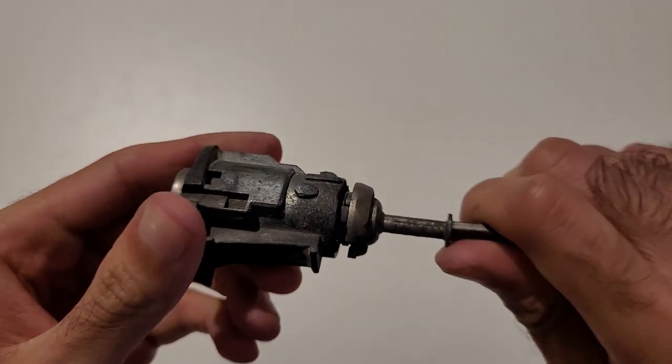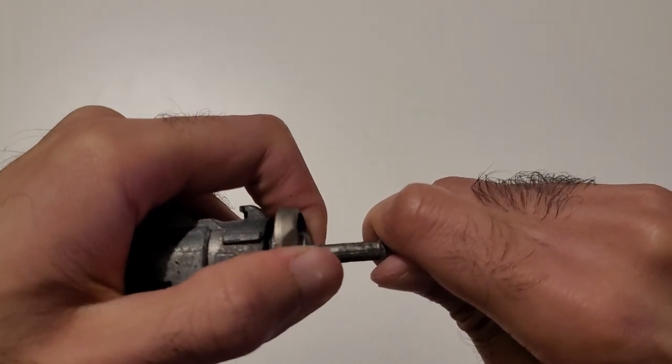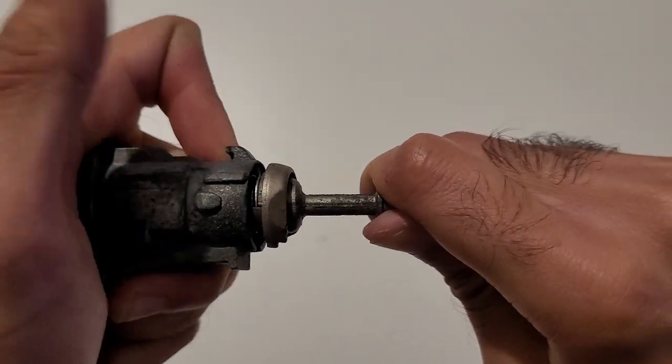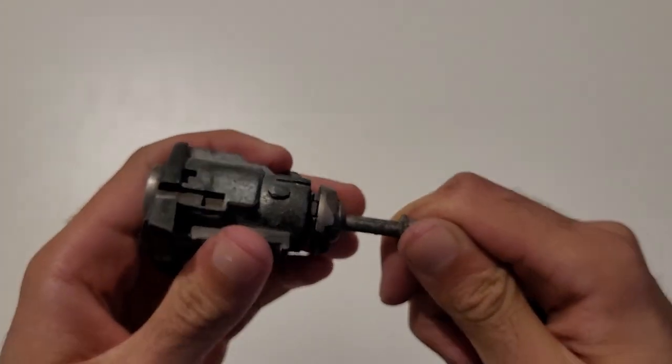And there we go, that is the lock back together. Like I say, it's simply a case of making sure that this clip goes all the way back on, and then you can let go of the tension and that should be your lock reassembled.